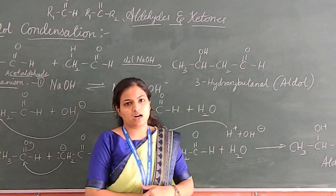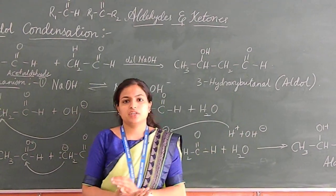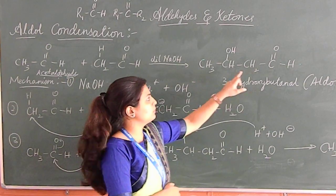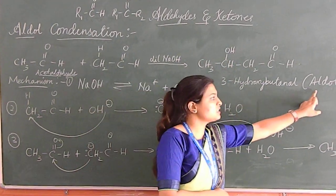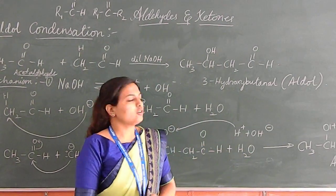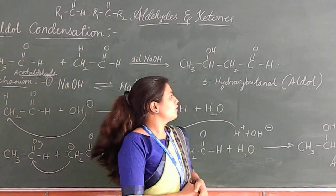Aldol is a mixture of C double bond O as well as hydroxyl. Carbonyl group and alcohol together is given as aldol. If it is a ketone, we will call it as ketol.